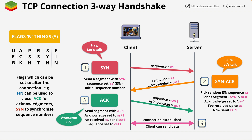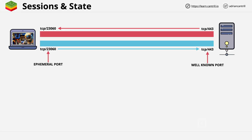This is a process you need to be comfortable with, so make sure you understand every step. Now another concept I want to cover is sessions and the state of sessions. You've seen this architecture before — a client communicating with a game server. The game server is running on a well-known port, TCP 443, and the client is using an ephemeral port, 23060, to connect with port 443 on the game server.